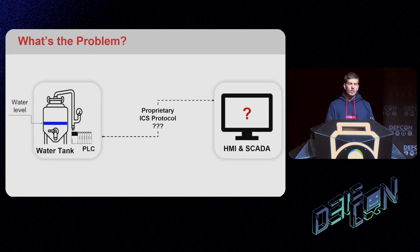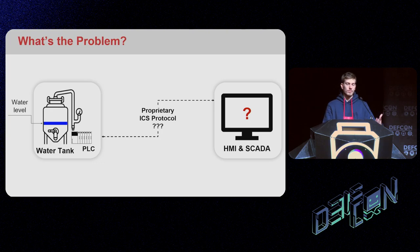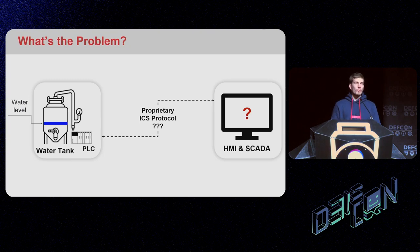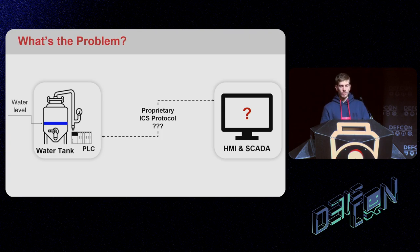Let's start with what is the problem — why OPC UA was created in the first place. In the past, let's say we had a physical process, in this case a water tank that we want to keep track of the water level. We have a PLC with some logic that keeps track of the water level using sensors, configured as variables.